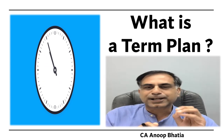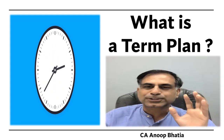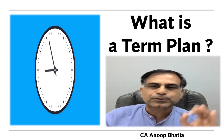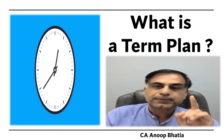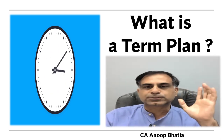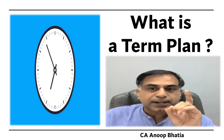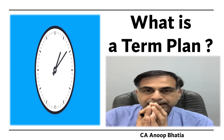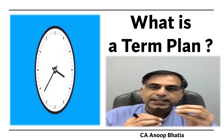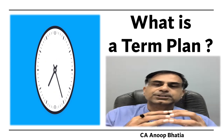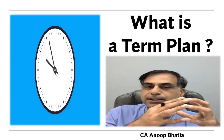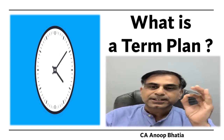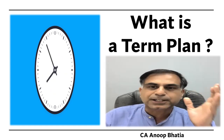Believe me, my dear friends, I am not here today to sell you any insurance plan. I am just here to let you know this simple plain vanilla product which is one of the best products when you think of buying an insurance policy. The data I am going to provide you is very important — in a country like India, within an age group of 25 to 35, the insurance penetration is just 17%, meaning only 17% of persons in this age group are insured.